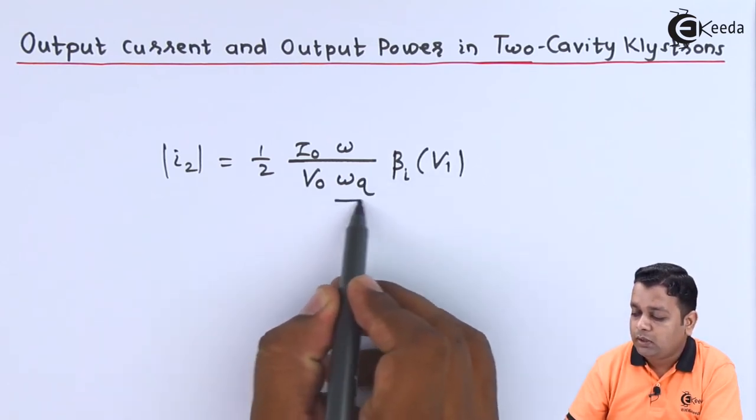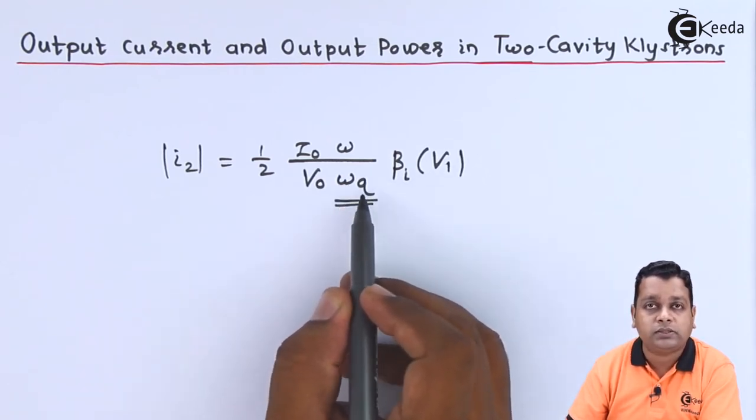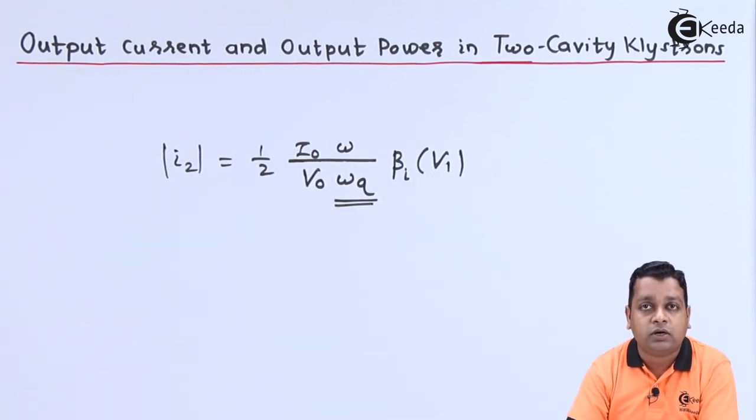Now the new parameter here is omega_Q. Omega_Q is actually the reduced plasma frequency. This is also discussed with respect to the multi-cavity klystrons.